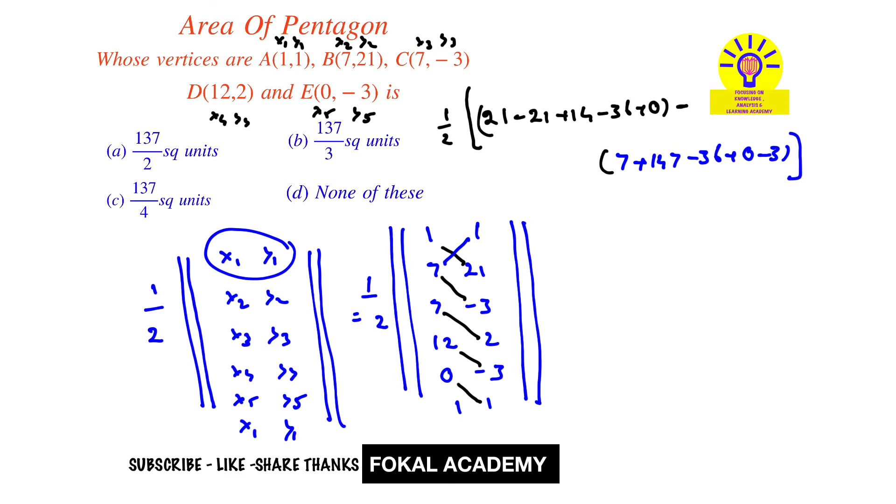By using calculator, by simplifying this we will get 137 by 2 square units, and this is the area of pentagon for the given problem. So from the options, option C is the correct option. Thanks for watching, please subscribe, like, share. Thanks.